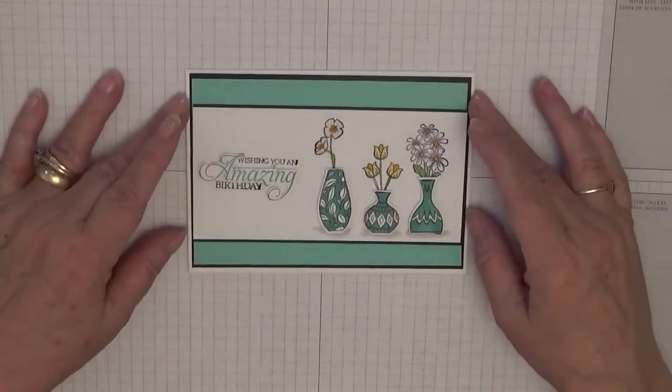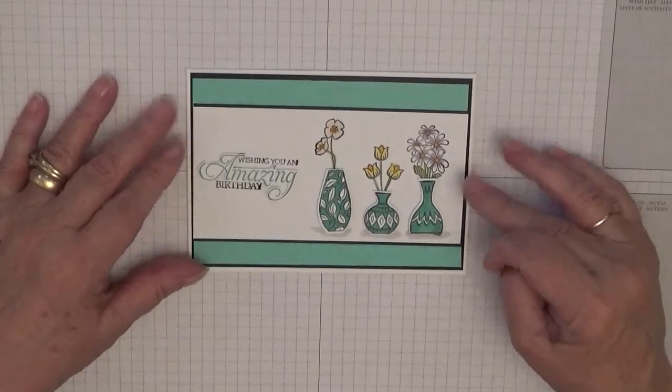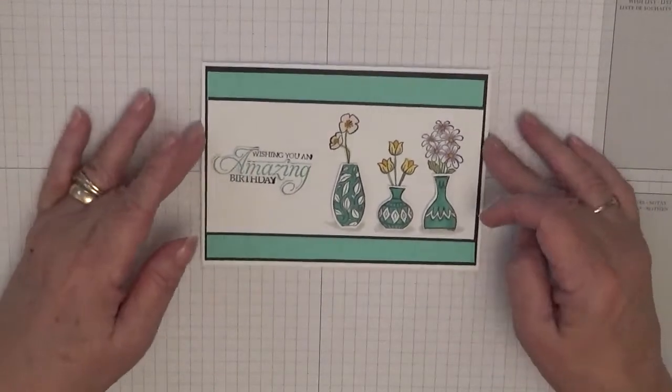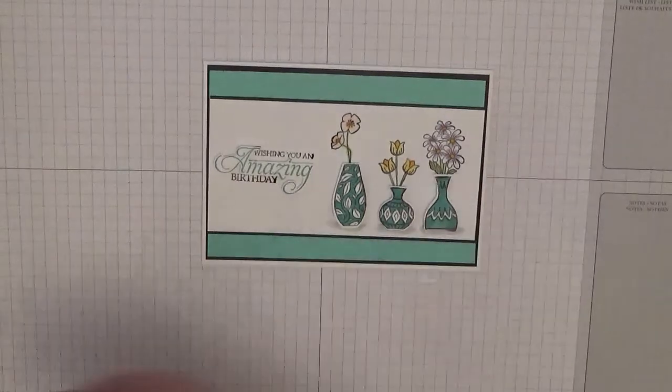Hello, Georgie Burns here. Today I'd like to show you how I made this card. To make this card we use the stamp sets Vibrant Vases and Very Vases.